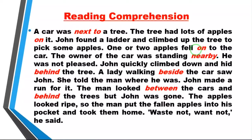Your turn. The car was next to a tree. The tree had lots of apple on it. John found a ladder and climbed up to the tree to pick some apples. One or two apples fell onto the car. The owner of the car was standing near a bike. He was not pleased. John quickly climbed down and hid behind the tree. The lady walking beside the car saw John. She told the man where he was. John made a run for it. The man looked between the cars and behind the trees, but John was gone. The apples looked ripe, so the man put the fallen apples into his pocket and took them home. Waste not, want not, he said.